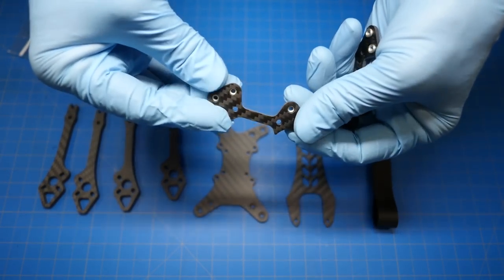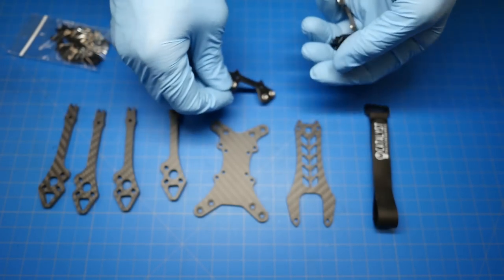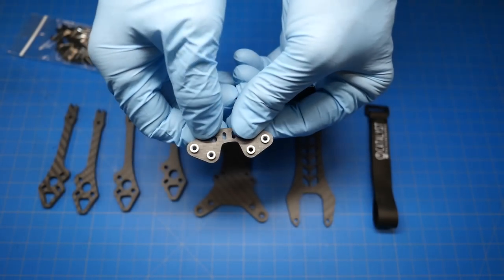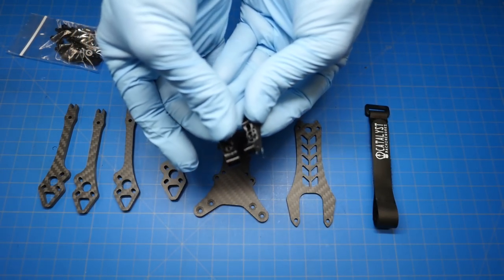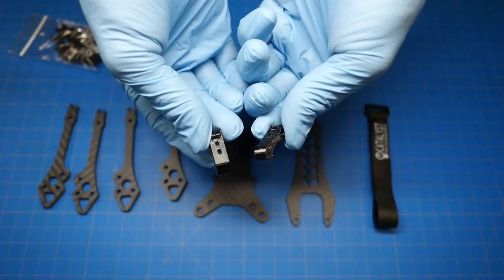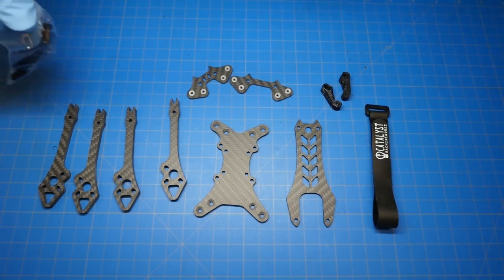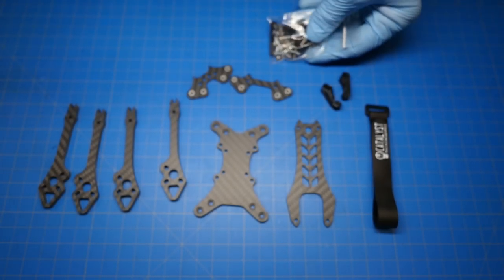This is the front cross brace with M3 press nuts already installed for you. This is the rear cross brace, same thing, 4 press nuts installed. These are your camera mount parts, little TPU pieces of plastic, and then all the various fasteners.